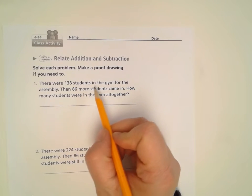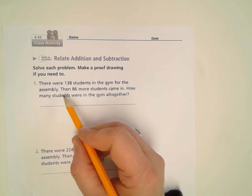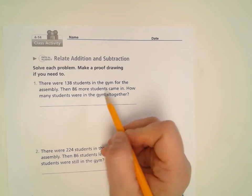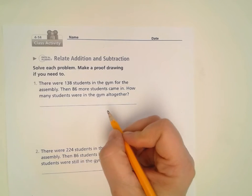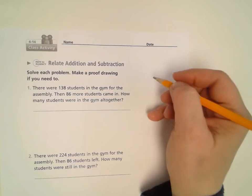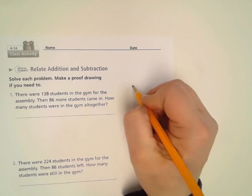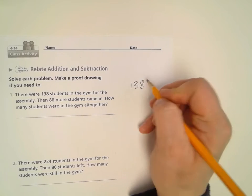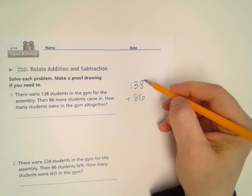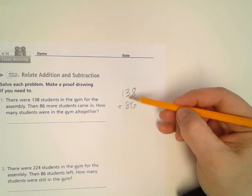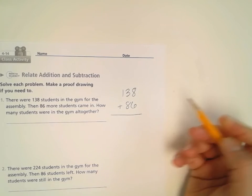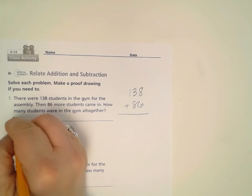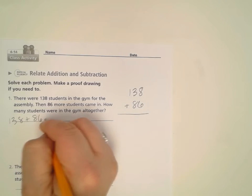It says there were 138 students in the gym for an assembly. Then 86 more students came in. How many students were in the gym altogether? So we have some more coming in. So we're doing some adding. So I'm going to write 138 plus 86. I'm going to make sure that my ones and tens are lined up in their place value. I'm also going to write 138 plus 86 here as my equation.